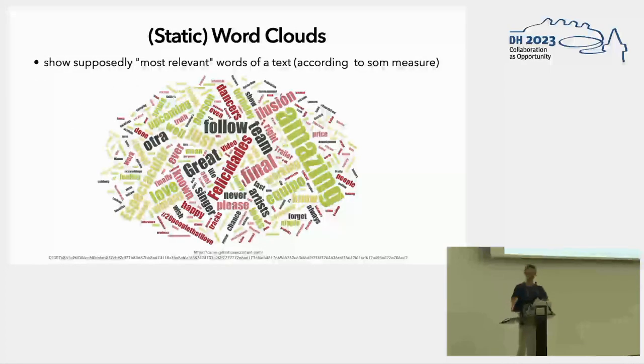And here's a typical word cloud as you might have already seen. So I call them static word clouds, so you just paste in the whole text as a whole and you get out a static view of the words. And they are used to show the supposedly most relevant words of a text according to some measure.